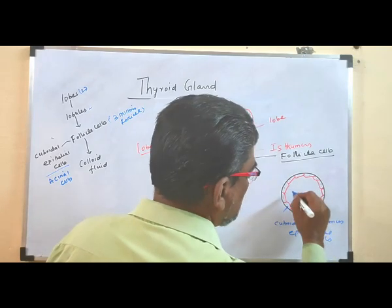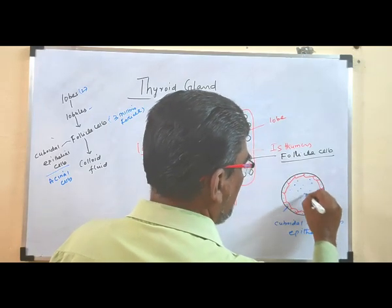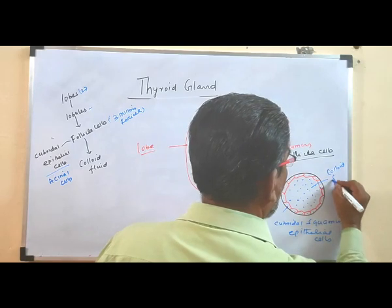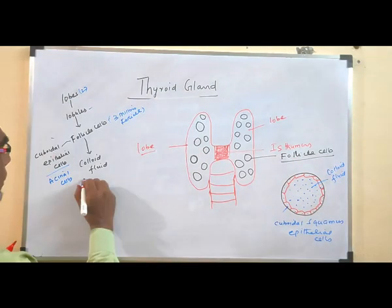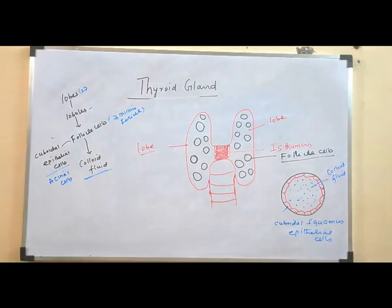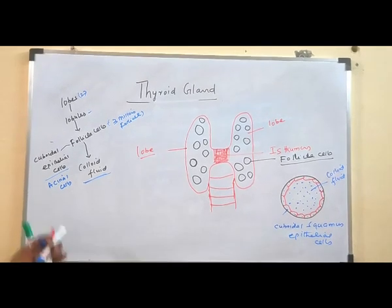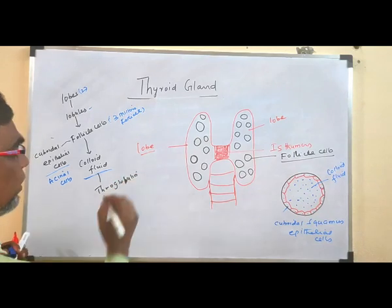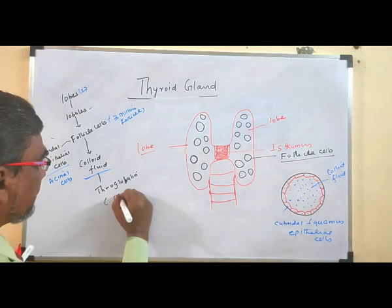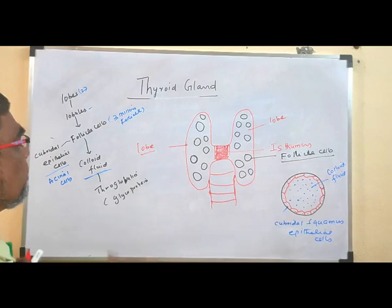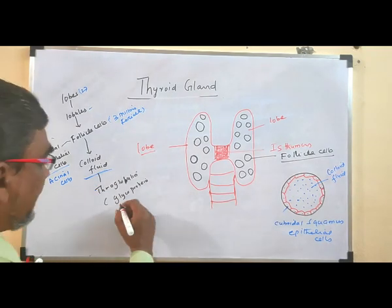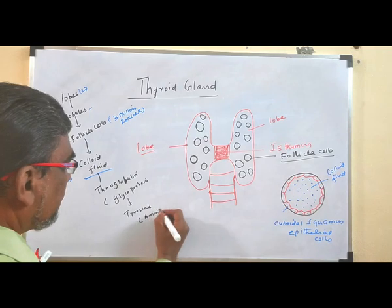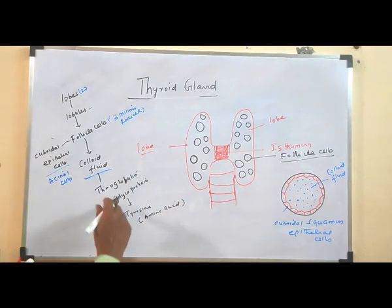Inside the lumen — this cavity inside the follicle — there is a colloid fluid. Inside this colloid fluid, one more substance is present called thyroglobulin. Thyroglobulin is a glycoprotein. It is a compound of tyrosine amino acids.